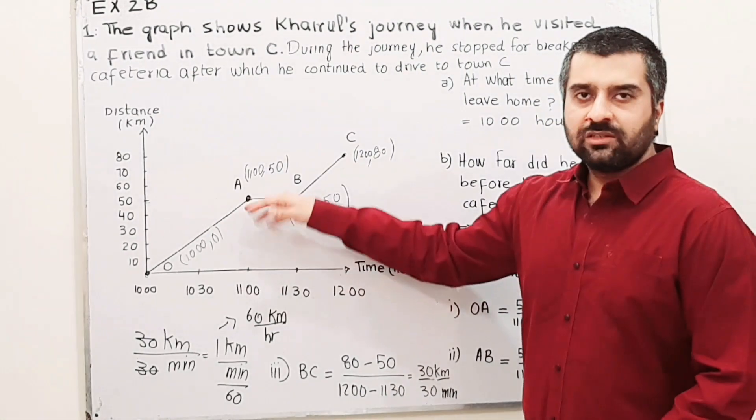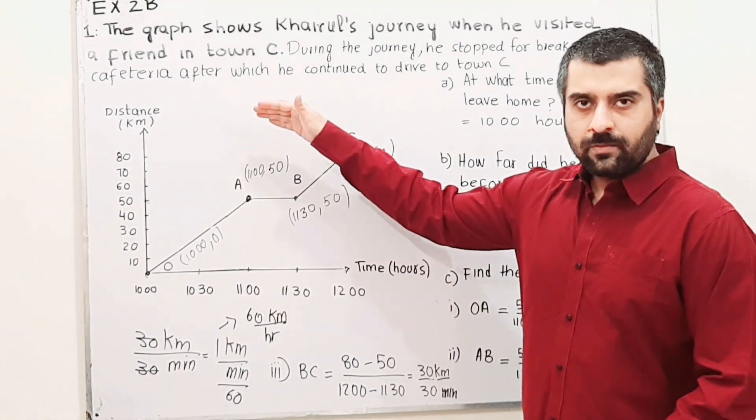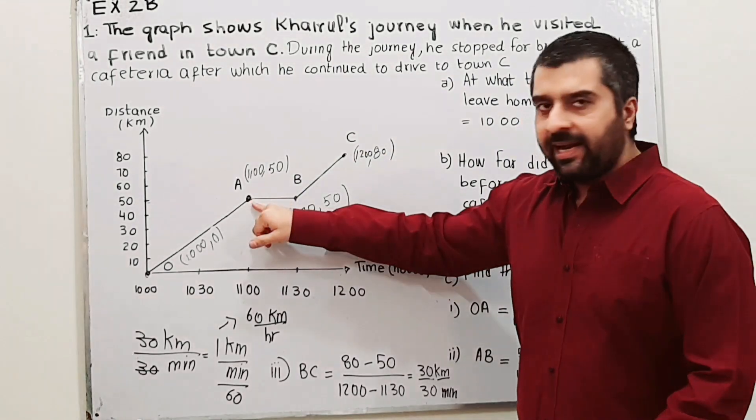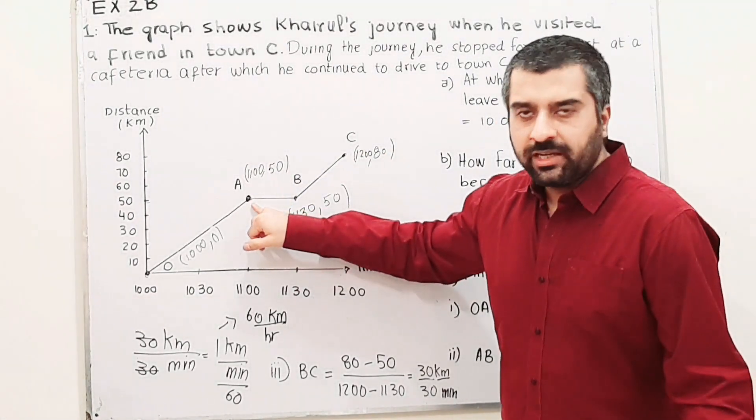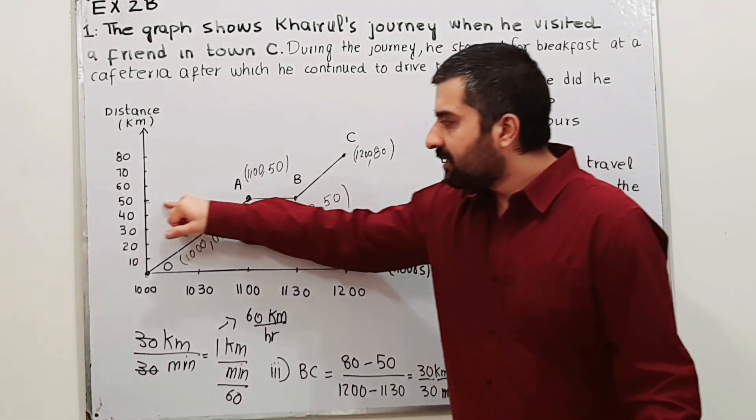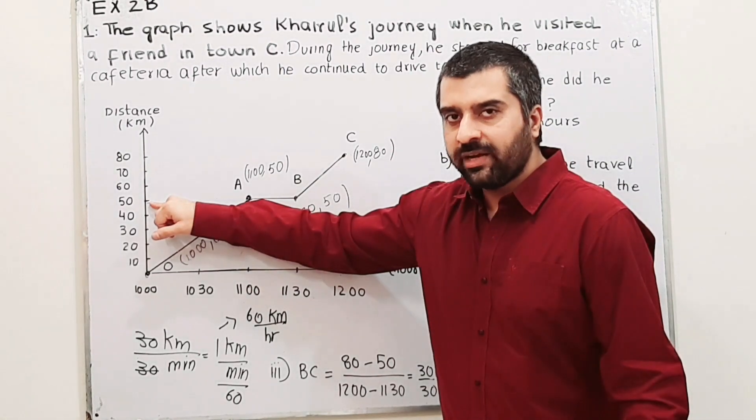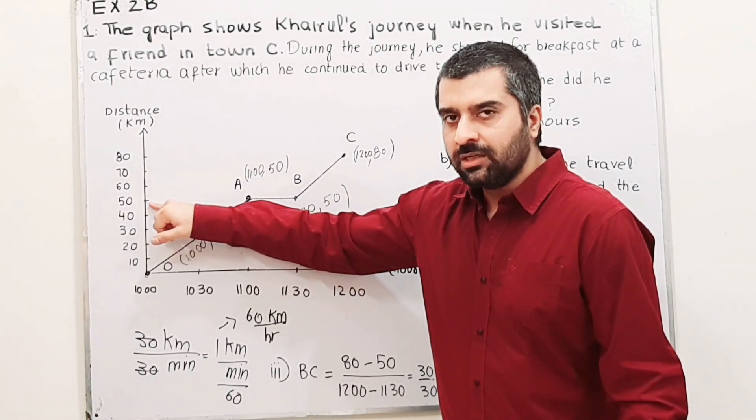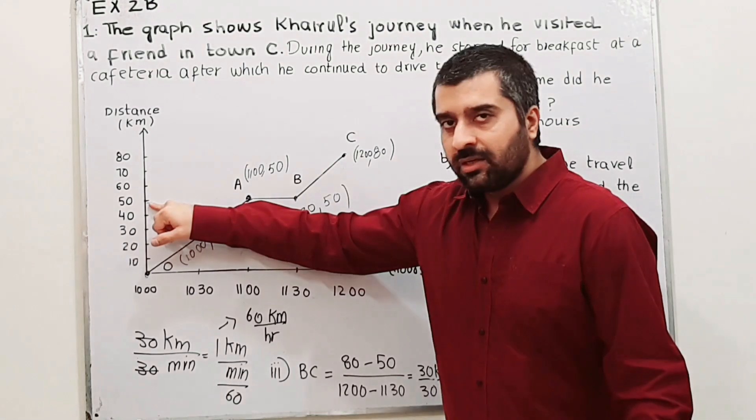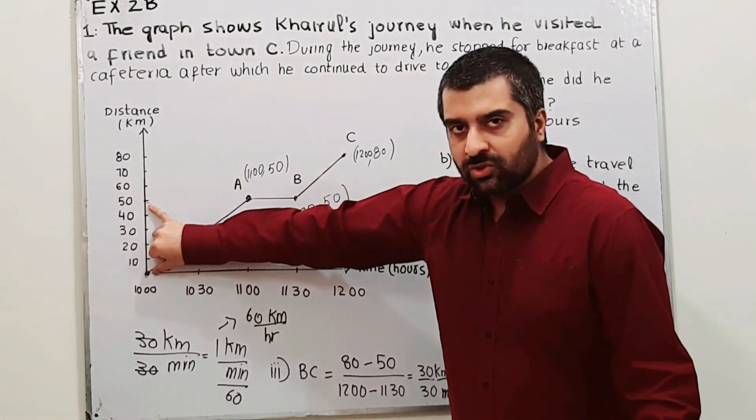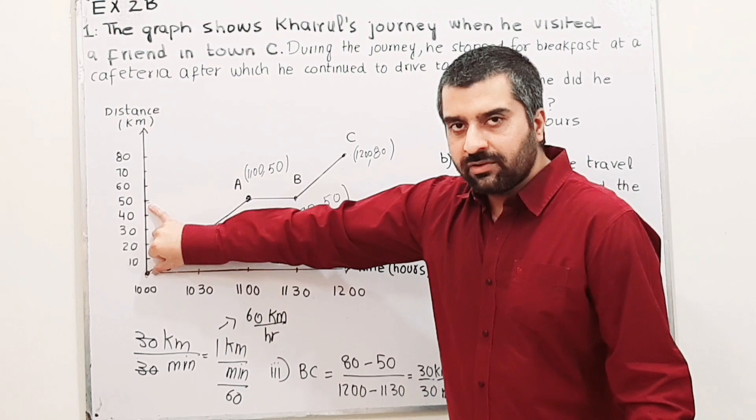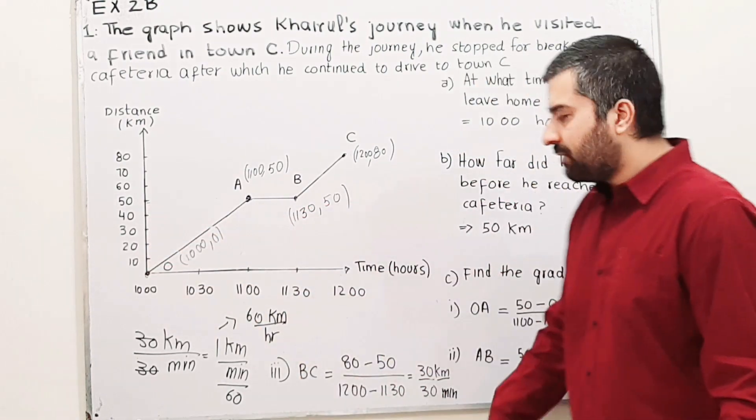After point A, there is no increase in the distance, so he is at cafeteria when he is at point A. At point A, you can find the distance from the y-axis. The distance is 50 kilometers. So he has covered 50 kilometers from his home till he reached cafeteria. The answer is 50.